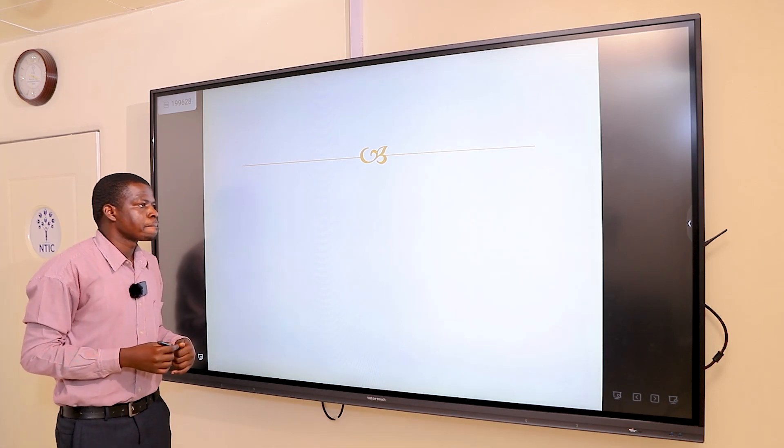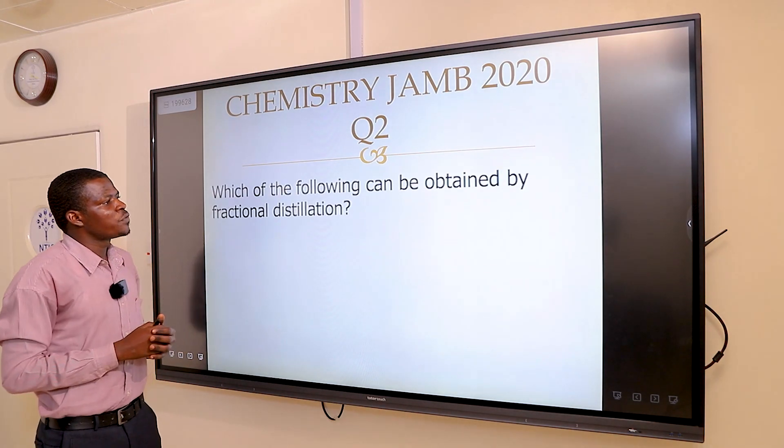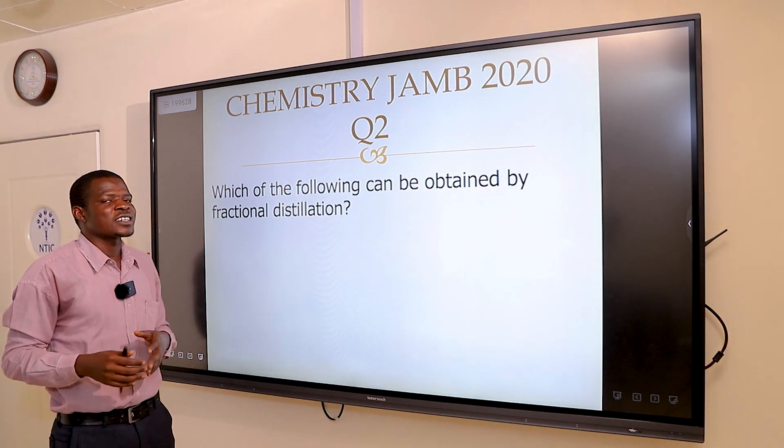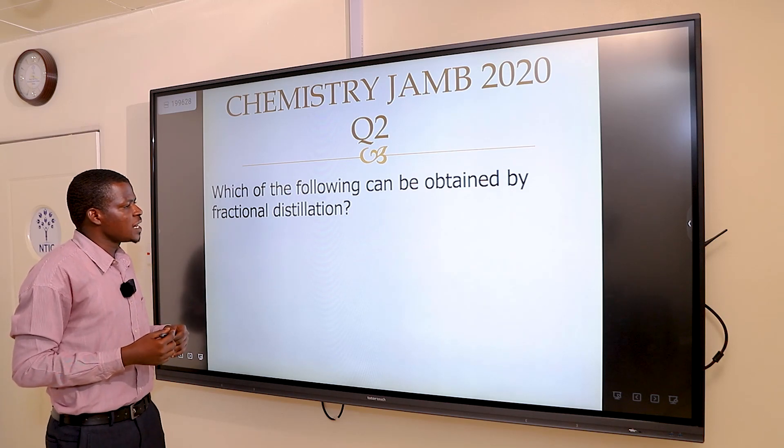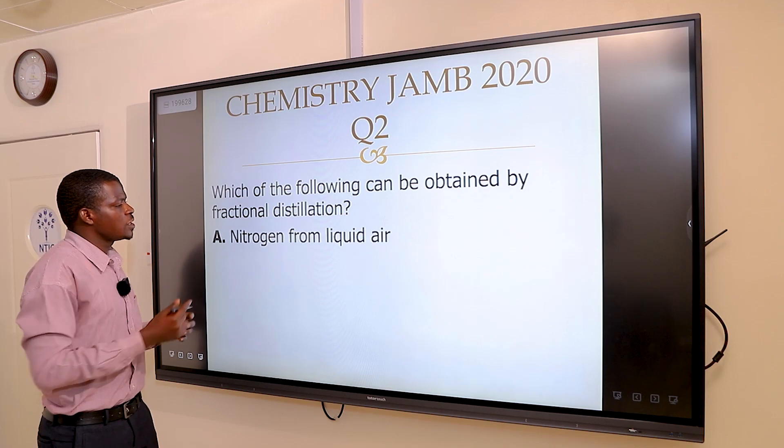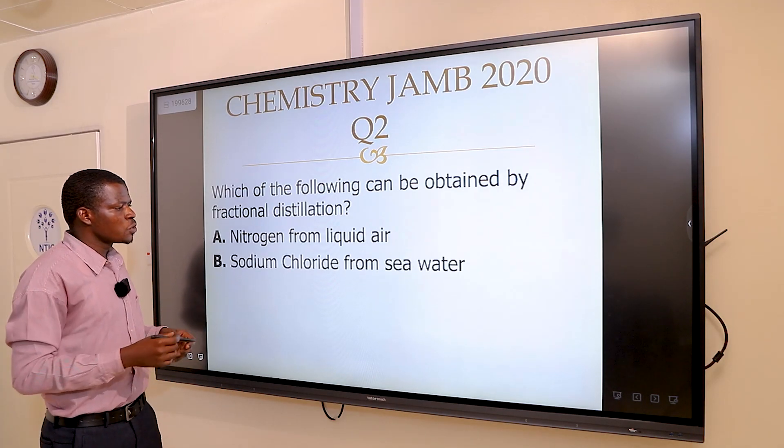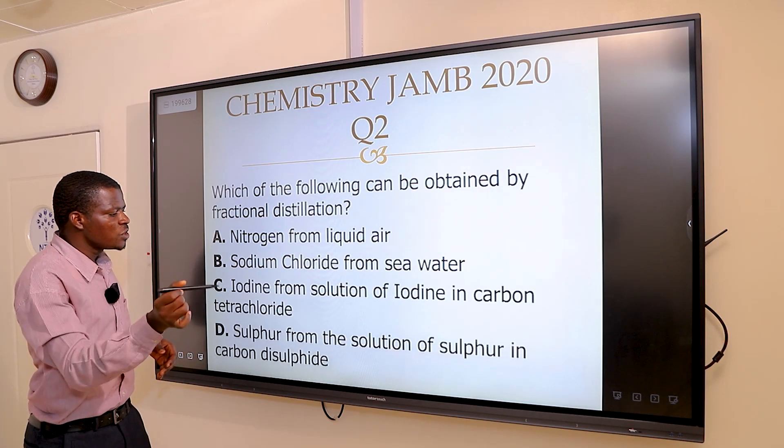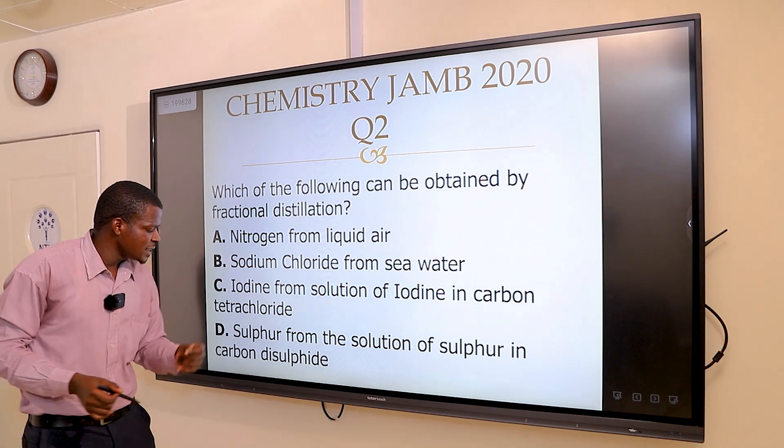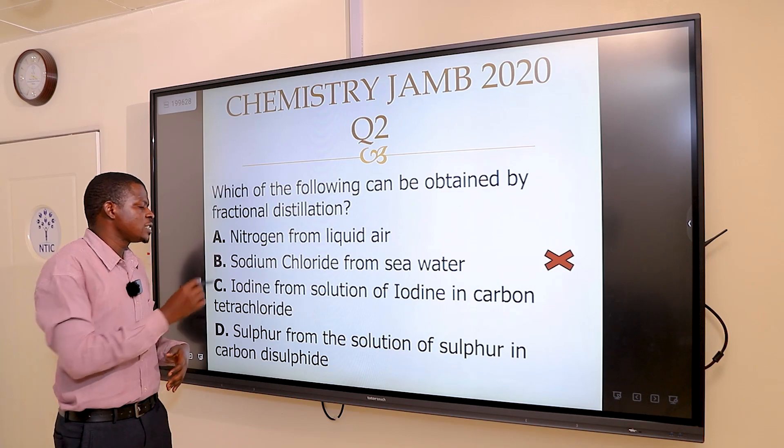The next question says: which of the following can be obtained by fractional distillation? The options are: A, nitrogen from liquid air; B, sodium chloride from sea water; C, iodine from solution of iodine in carbon tetrachloride; and D, sulfur from the solution of sulfur in carbon disulfide.